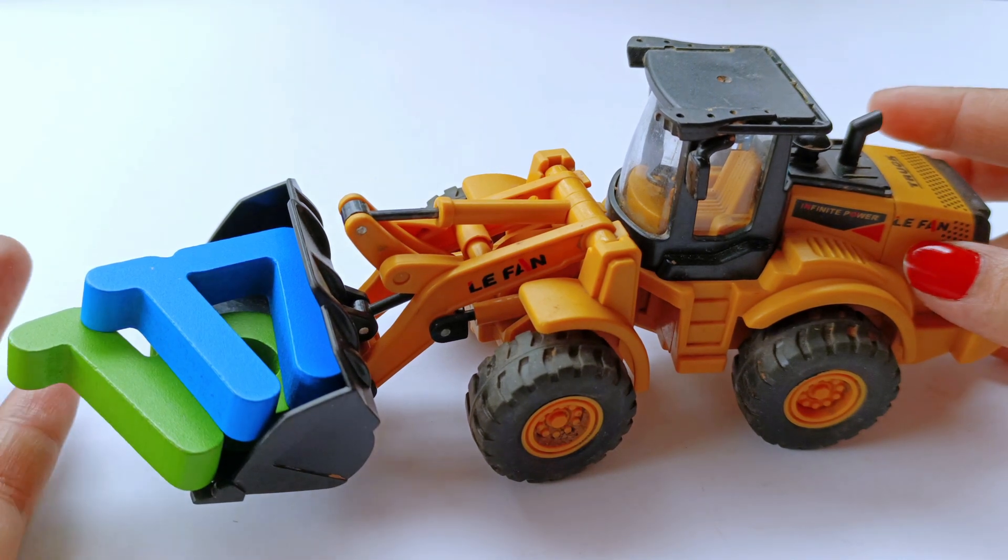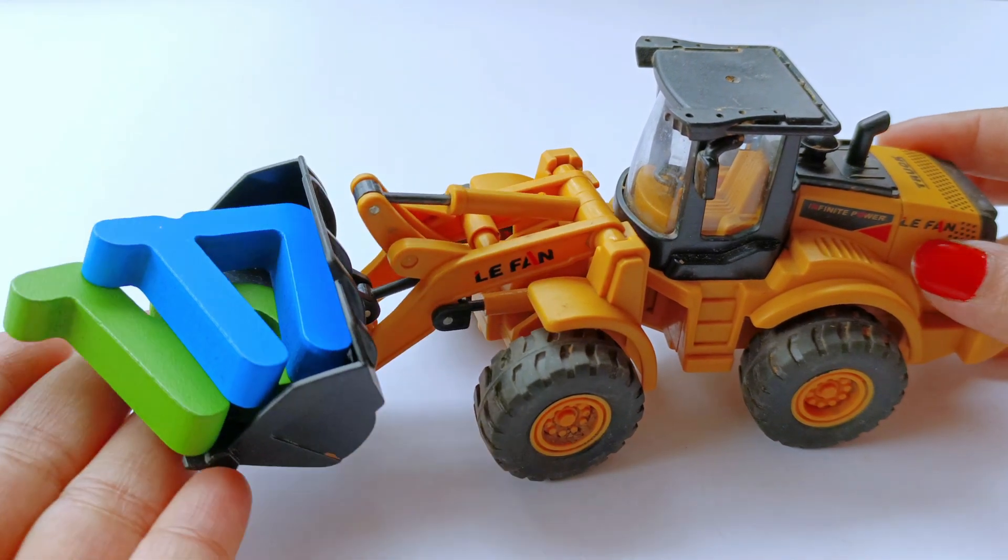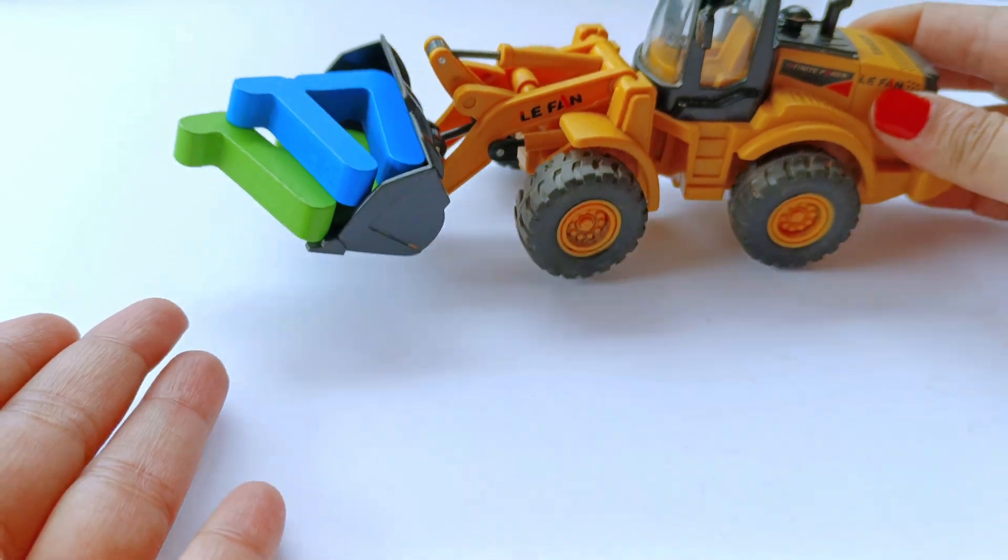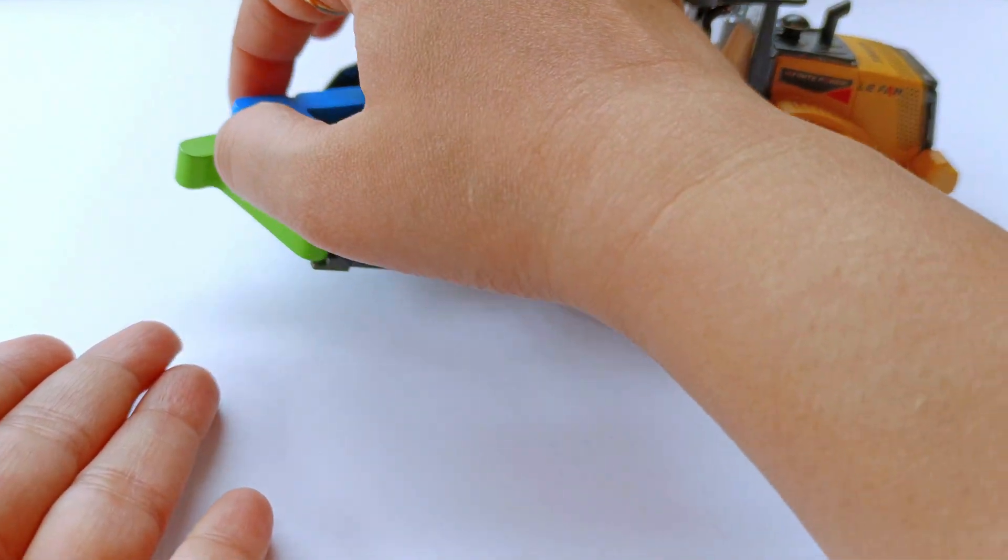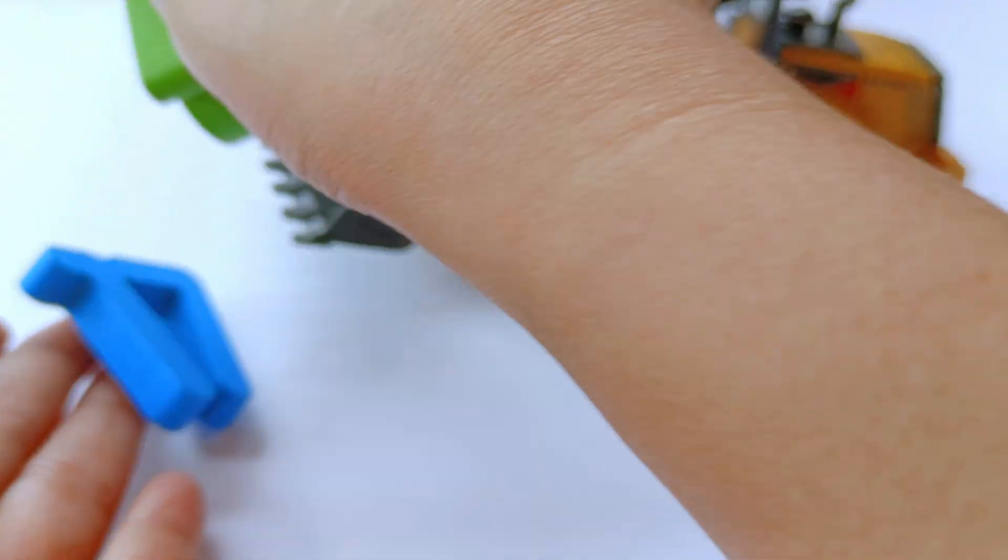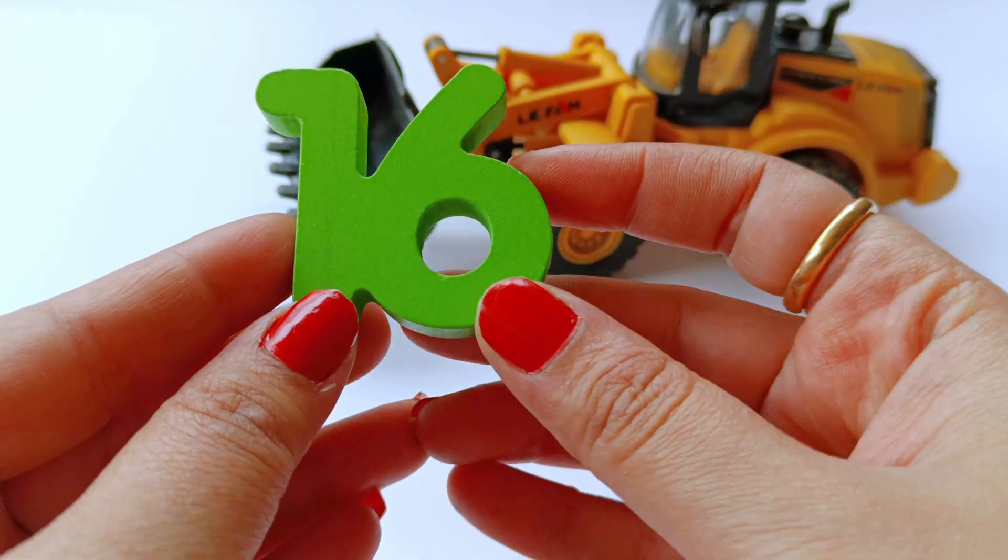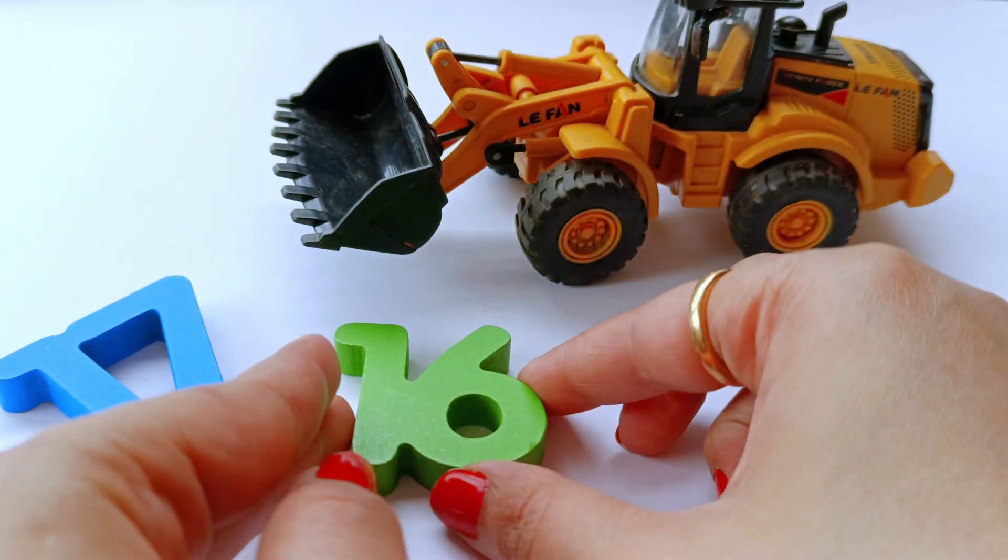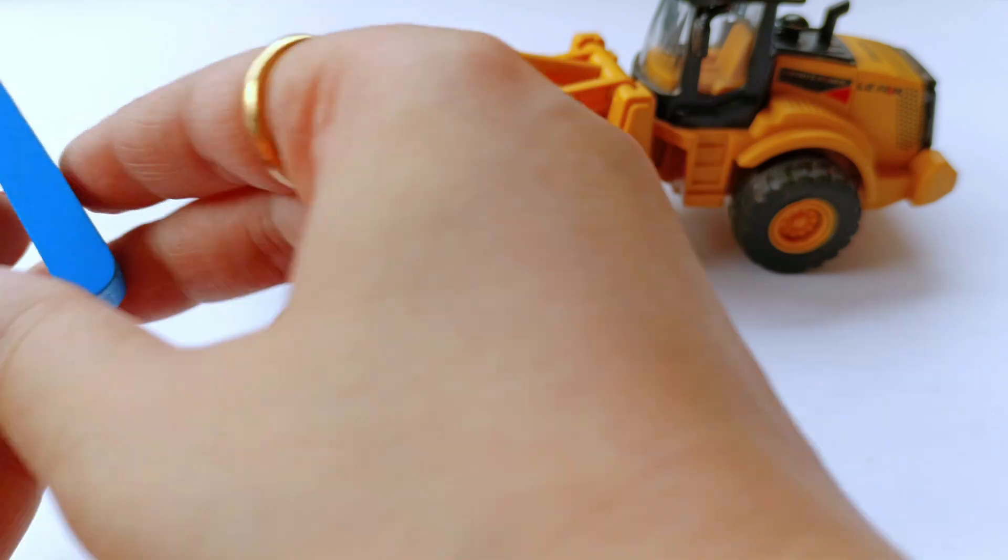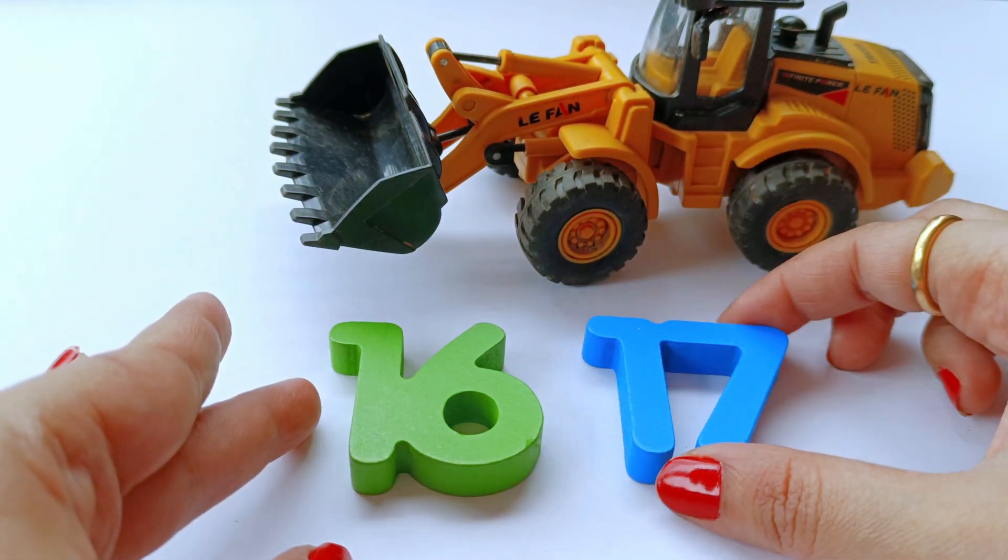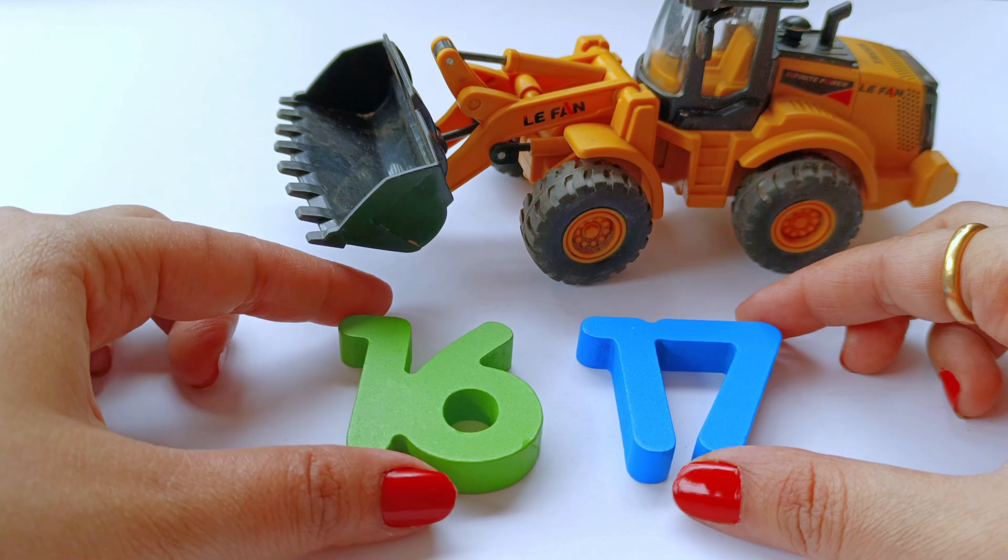Oh look, this Jessie B has got some numbers. Let's see. Number 16, green colour. And number 17, blue colour.